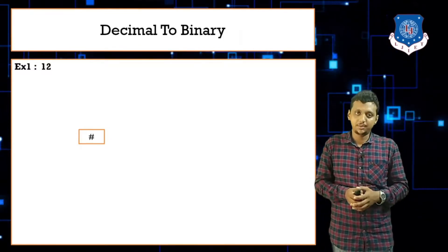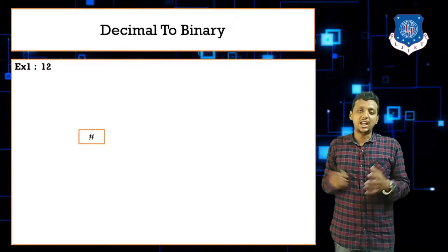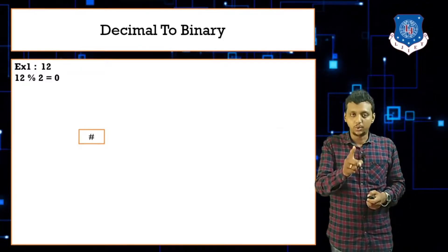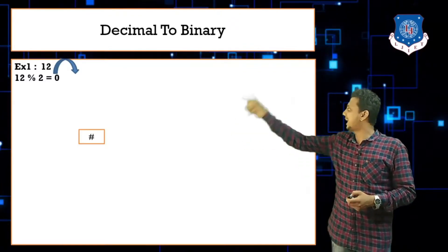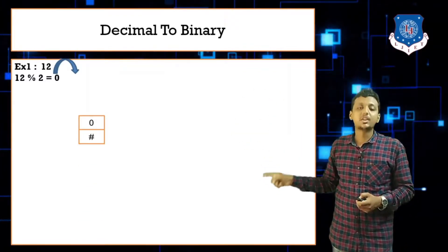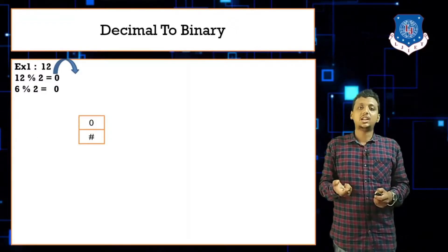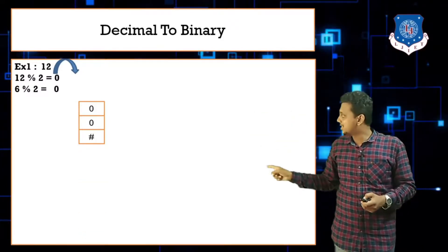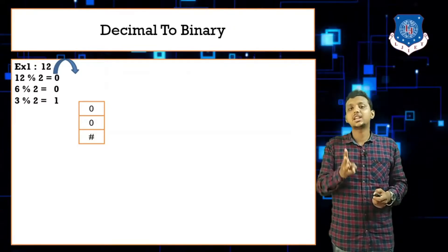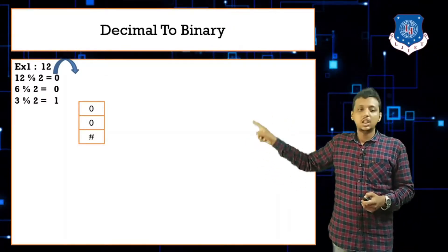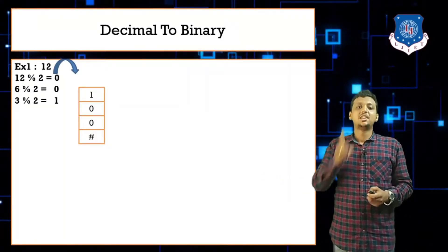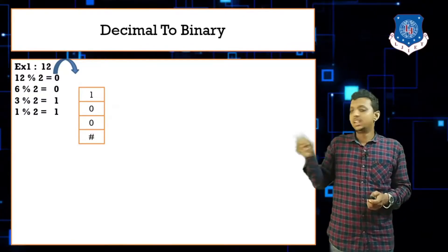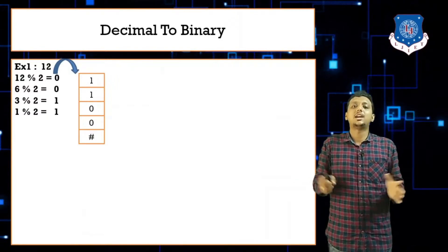Initialize the stack with hash. Now: 12 mod 2 = 0, push 0 into the stack. 12 ÷ 2 = 6; 6 mod 2 = 0, push 0. 6 ÷ 2 = 3; 3 mod 2 = 1, push 1. Now 3 ÷ 2 = 1; 1 mod 2 = 1, push 1. This is our last step — when we get quotient 1, we stop.